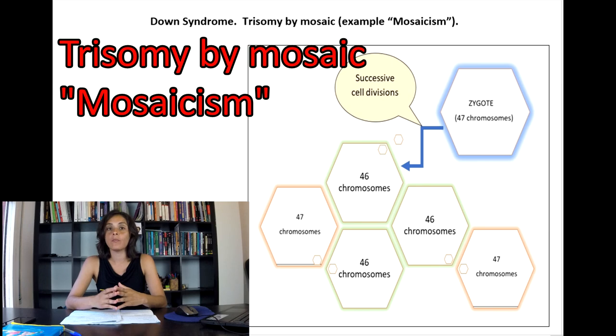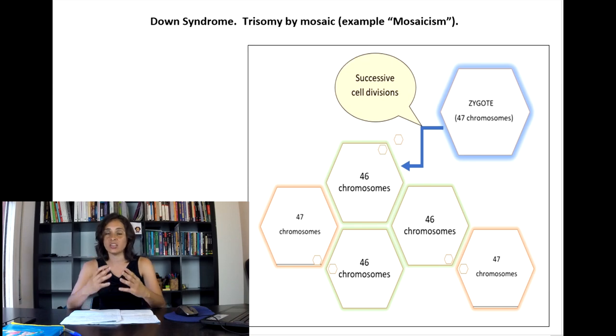A mosaic system is an alteration, a genetic alteration, in which in the same individual, two or more populations of cells with different genetic compositions coexist.